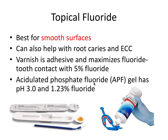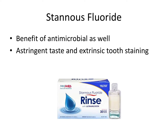APF gel temporarily and gently demineralizes enamel in a controlled way so that it can remineralize it with fluoride ions directly applied to the teeth within the gel. Varnish is clinically proven as the best method, but APF gel is also very effective. Stannous fluoride has the benefit of being a fluoride delivery agent while also having an antimicrobial effect due to dissociated tin ions that help battle bacteria. However, it has a bad taste and can cause yellow-brown tooth staining, similar to a chlorhexidine rinse.